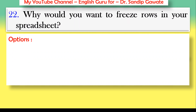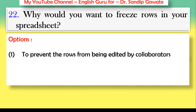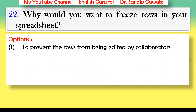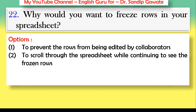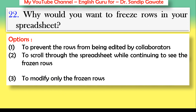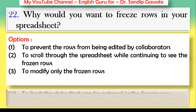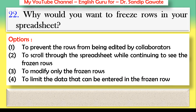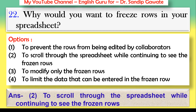Question 22: Why would you want to freeze rows in your spreadsheet? Options: to prevent the rows from being edited by collaborators, to scroll through the spreadsheet while continuing to see the frozen rows, to modify only the frozen rows, or to limit the data entered in the frozen row. The correct answer is option number two — to scroll through the spreadsheet while continuing to see the frozen rows.